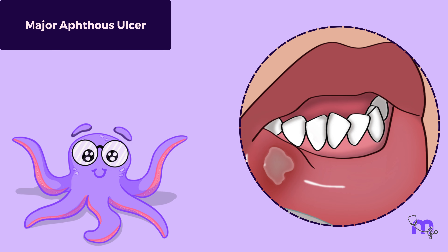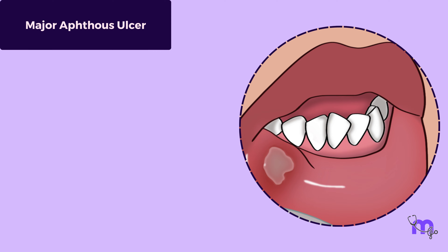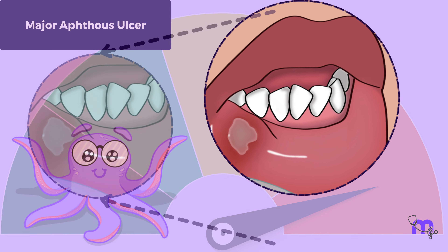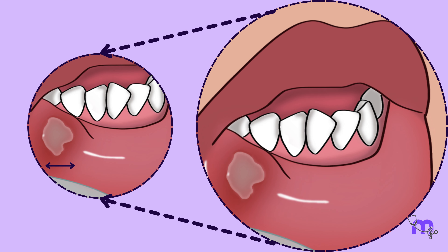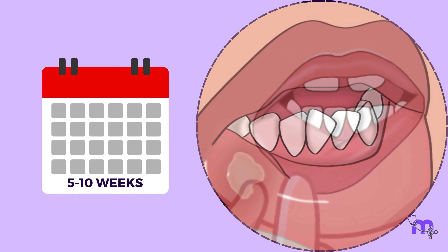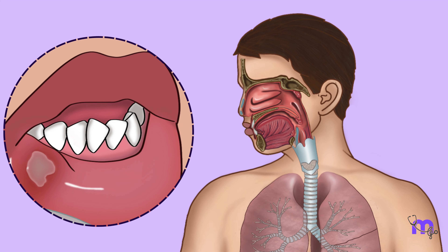Moving on to major aphthous ulcers. These are less common than minor ulcers, affecting about 10% of RAS patients. Major aphthous ulcers are a more severe form of the disease — larger and deeper than minor ulcers, typically exceeding 10 mm in diameter. They can last between 5 to 10 weeks and often leave scars when they heal. Unlike minor ulcers, they can appear anywhere in the mouth, including the throat and oropharynx.